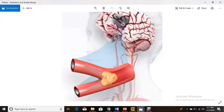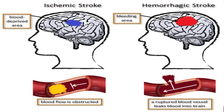Welcome back. Today I'll be talking about a stroke. A stroke is a medical condition in which poor blood flow to the brain results in cell death. There are two main types of strokes: ischemic stroke, which is due to the lack of blood flow, and hemorrhagic stroke, which is due to bleeding. Both result in part of the brain not functioning properly.